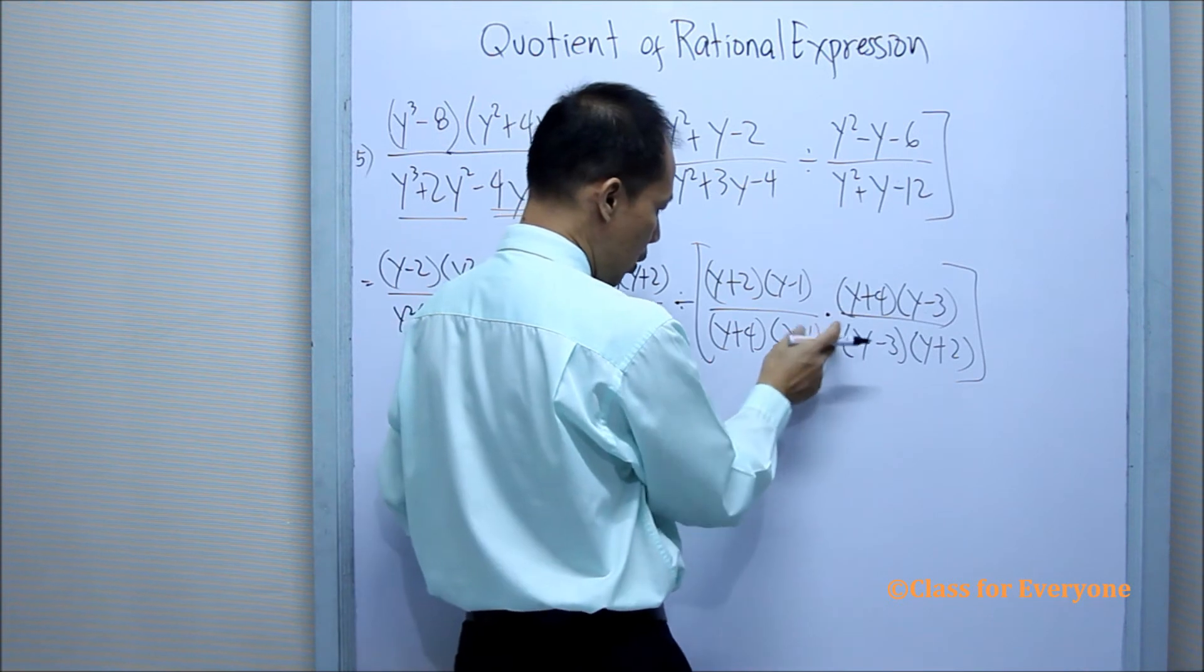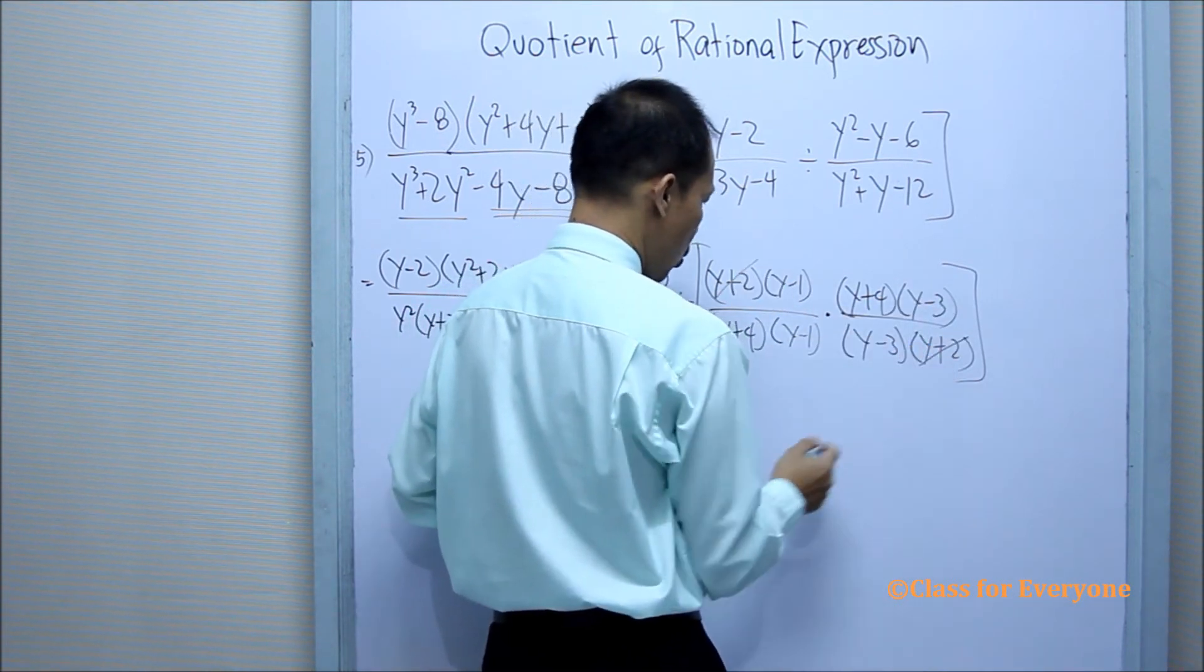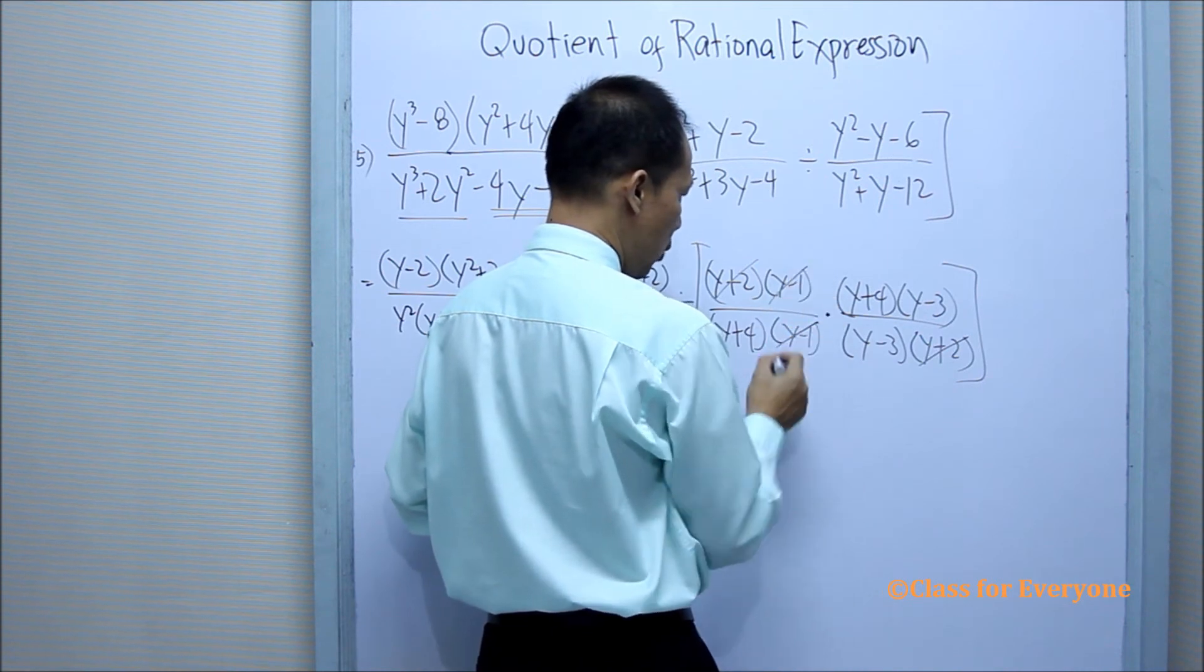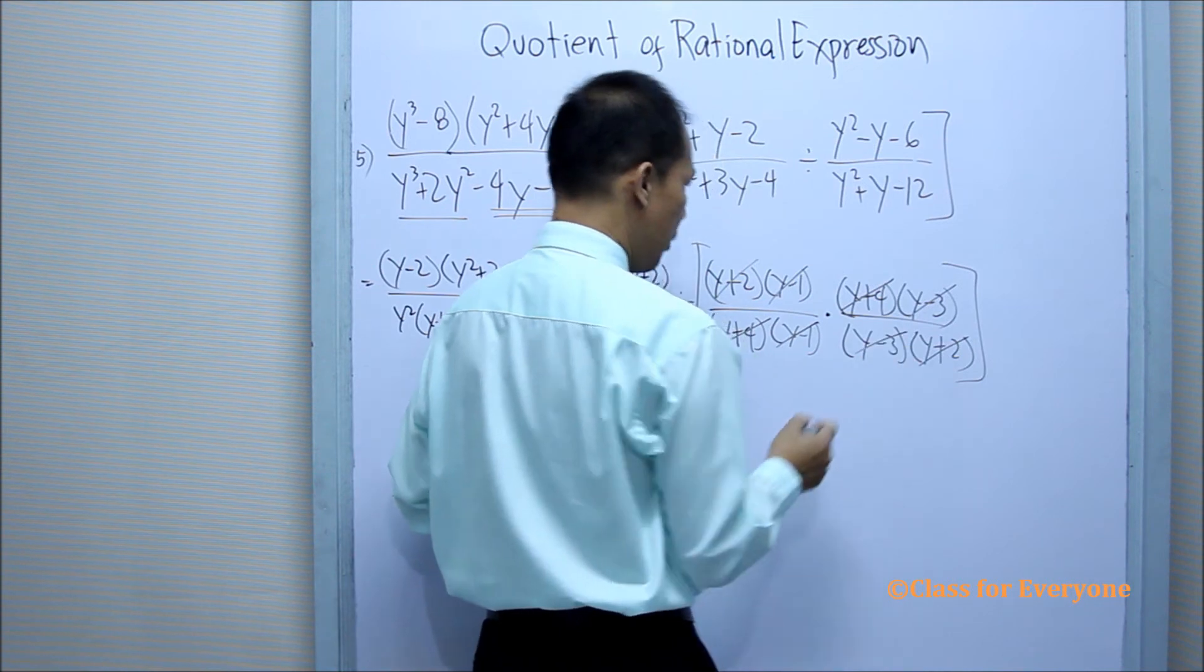So we can divide out because these are all factors: y plus 2 and y plus 2, y minus 1 and y minus 1, y plus 4 and y plus 4, and y minus 3 and y minus 3.